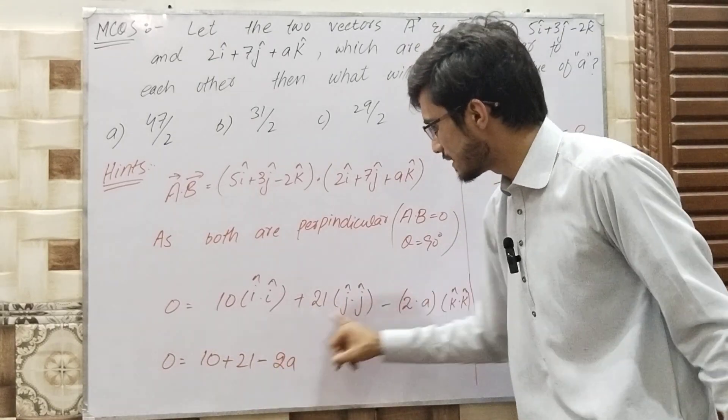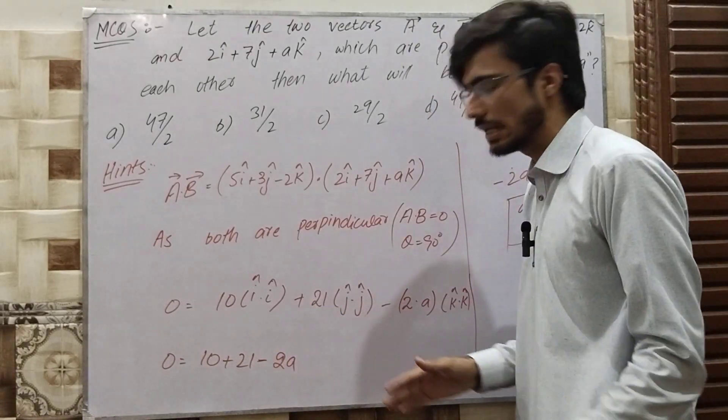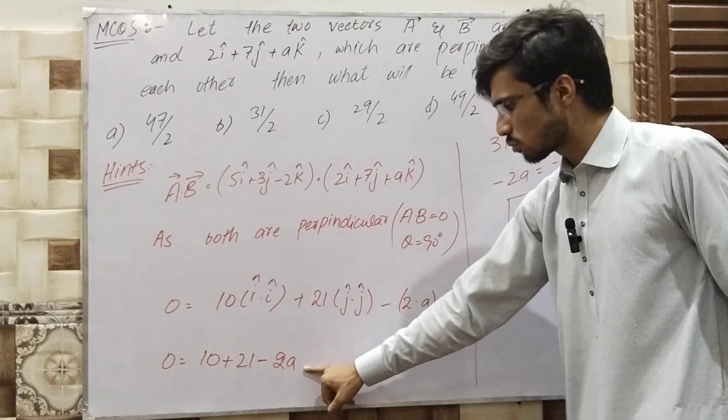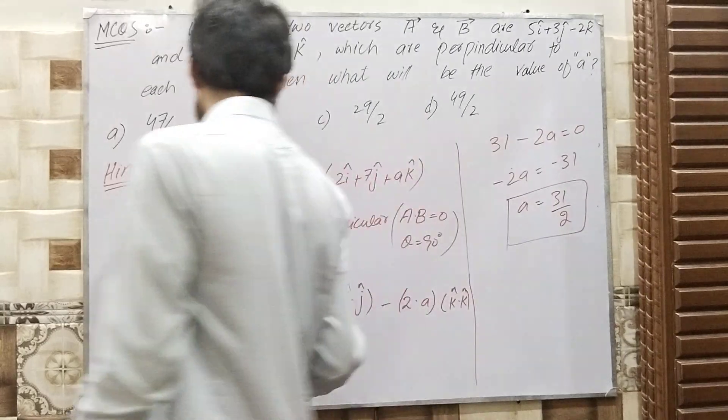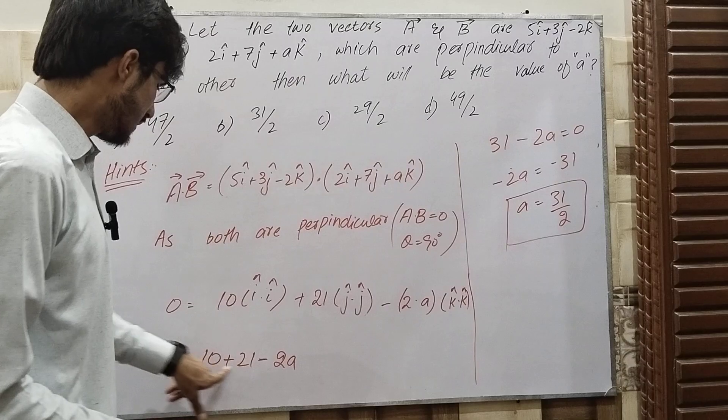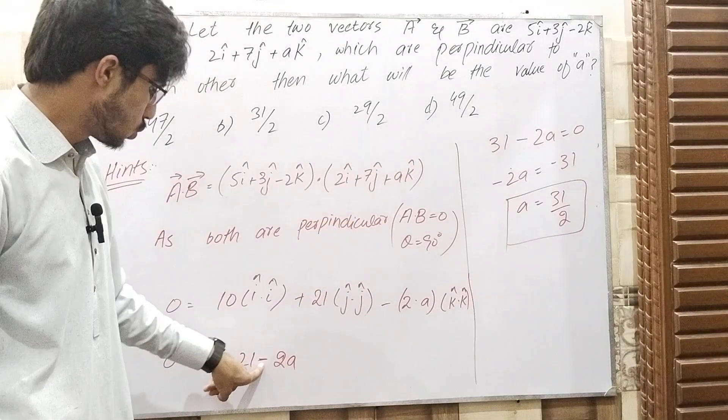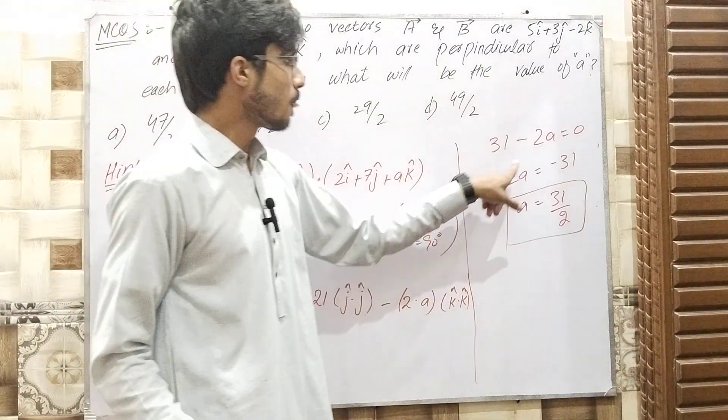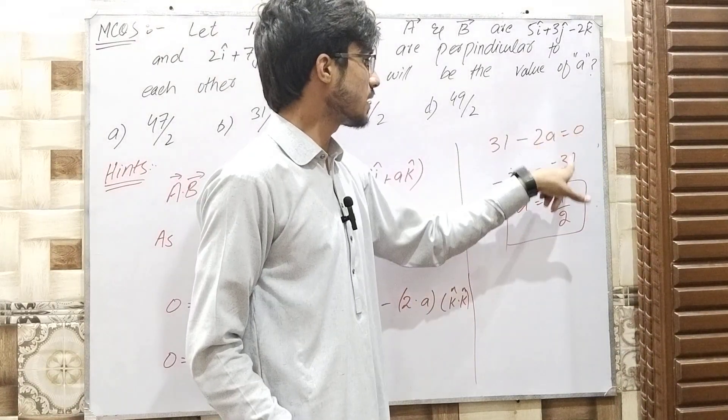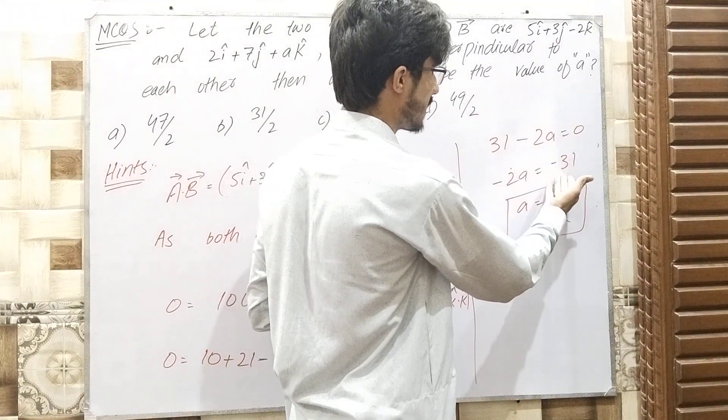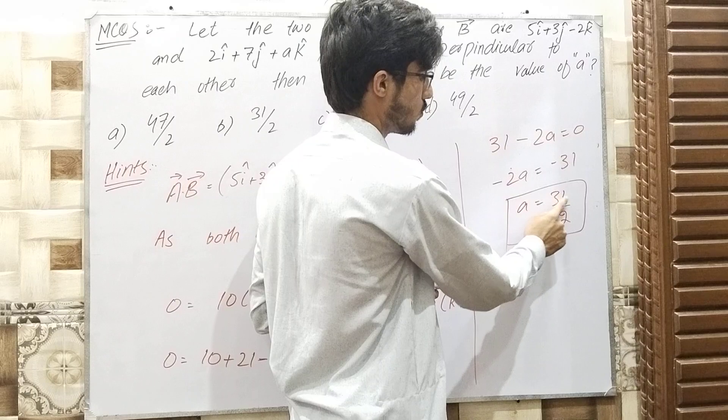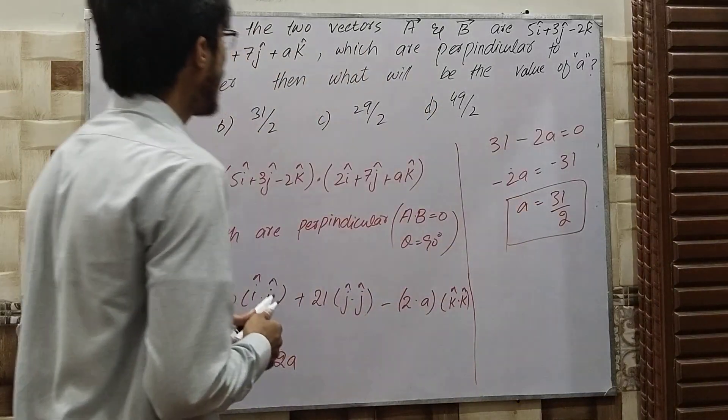So 31 - 2a = 0. Moving 2a to the other side: -2a = -31. Minus and minus cancel, dividing by 2, we get a = 31/2.